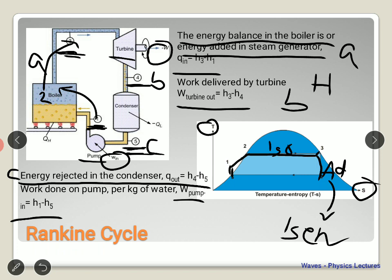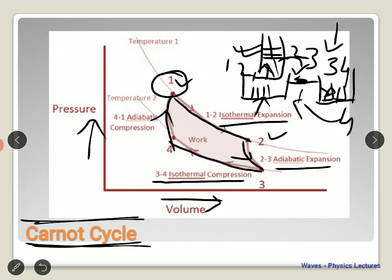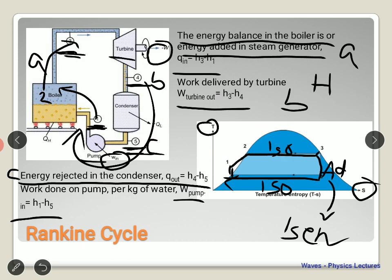From state 4 back to 1, entropy reduces and temperature remains the same — so it again becomes an isothermal process. This is basically a cycle of isothermal and isentropic processes. If you look at the Carnot cycle, it is a cycle of isothermal and adiabatic processes — isothermal expansion, isothermal compression, isentropic expansion, and isentropic compression. You can see there is a direct relation between the Carnot cycle and the Rankine cycle.